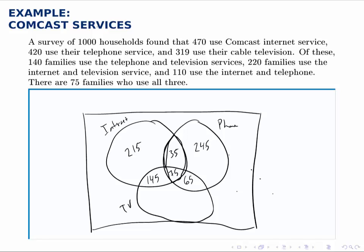Finally, for those who use TV, we're told there are 319. We've already accounted for 145, 75, and 65, which totals 285. Since there are 319 in the TV circle and we've counted 285 of them, we take 319 minus 285 and get 34 families in that region.